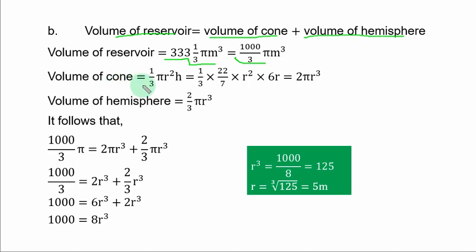Volume of the cone is 1/3 πr²h. So you have 1/3 π is 22/7. The radius is unknown while the height is 6r. When you simplify this, you have 2πr³ as the volume of the cone. Volume of the hemisphere is 2/3 πr³.